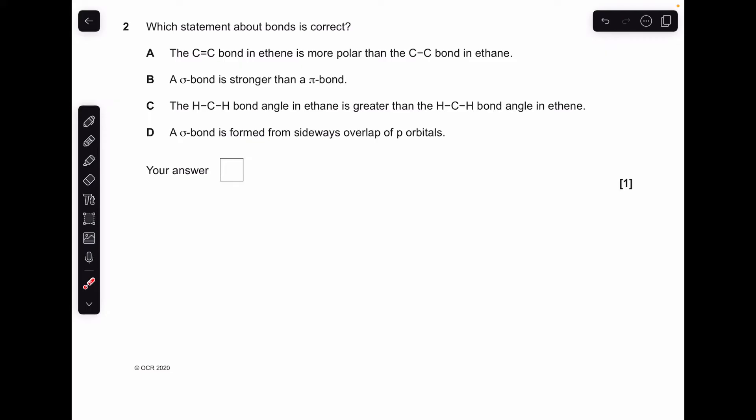Moving on to number two, which statement is correct about bonds? The C-C double bond in ethene is more polar than the C-C single bond in ethane. That's wrong, because neither of the bonds are polar—they're both made from carbon, which is the same atom. So there's no difference in electronegativity. Sigma bond stronger than pi bond? That's actually correct, so B was the answer.